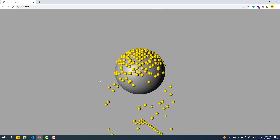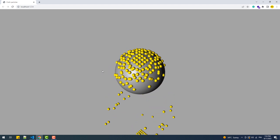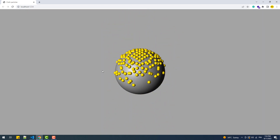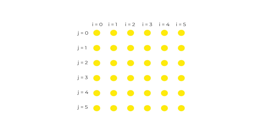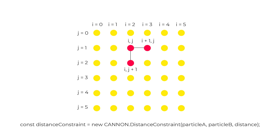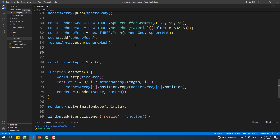Now that we've finished with the preparations, all we need to do to turn that grid into a web is a bit of magic. The idea is simple: we are going to use a couple of for-loops to create an invisible connection between every particle and the particle that comes after it in the same row and also in the same column. To create a connection we need to create an instance of the DistanceConstraint class, whose constructor takes four arguments (the fourth being optional). The first two arguments represent the pair of particles to attach, and the third represents the distance to maintain between each pair.